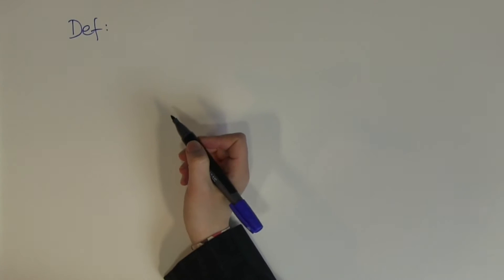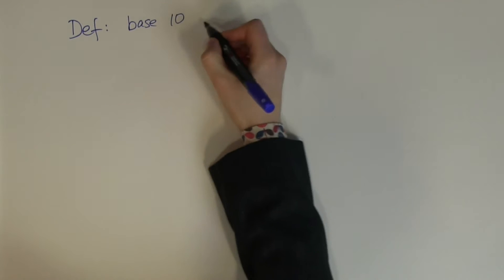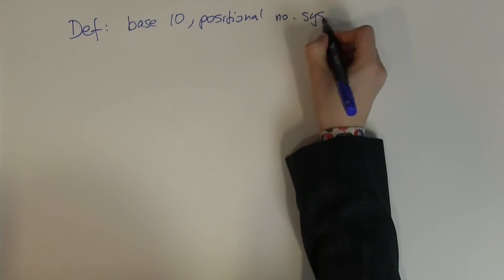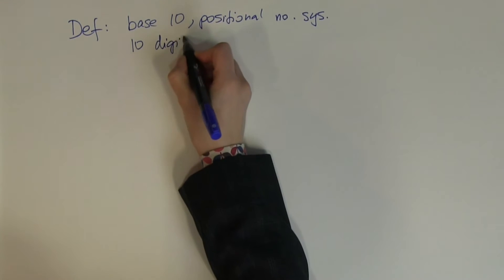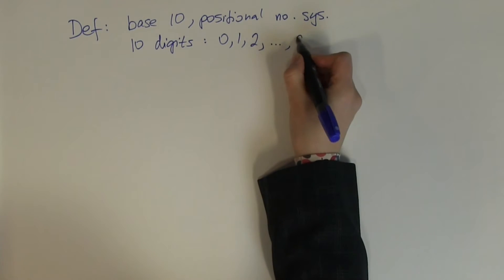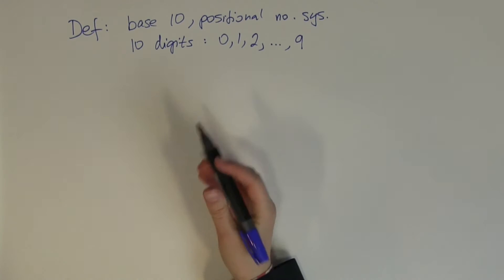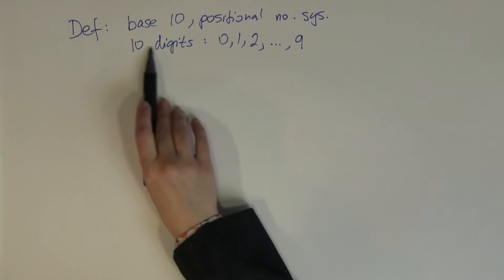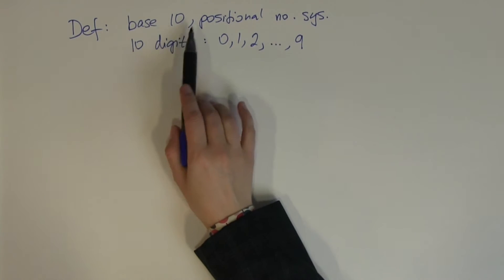By definition, the decimal number system is a base 10 positional number system which uses 10 digits: 0, 1, 2, all the way up to 9. That's 9 digits plus 0, which makes 10. Base 10 means you are using 10 digits, and every place value or position is represented by powers of 10.